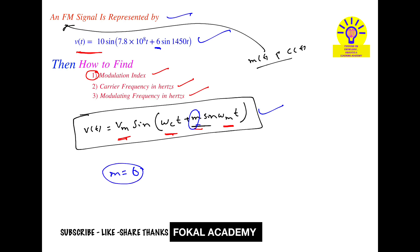The next question is to find the carrier frequency in hertz. In the given signal, the term corresponding to ωc·t is 7.8 × 10^8·t. By comparison, ωc = 7.8 × 10^8 radians per second. Since ωc = 2π·fc, we have 2π·fc = 7.8 × 10^8.